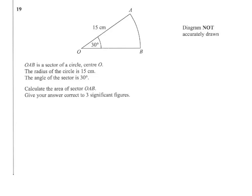We've got to find out the area of sector OAB. We know that the radius is 15 and the angle is 30.